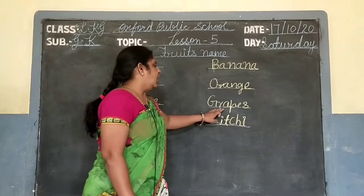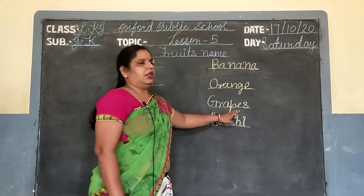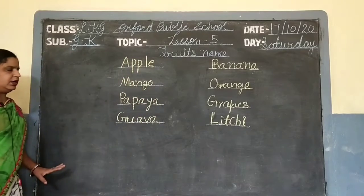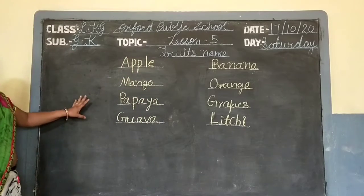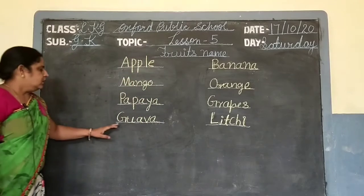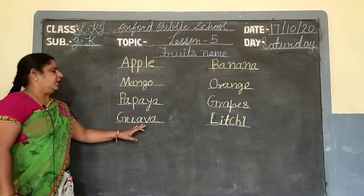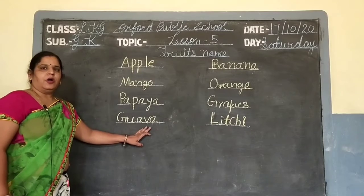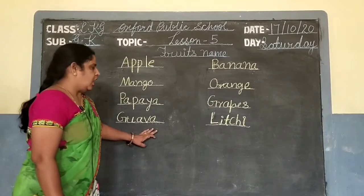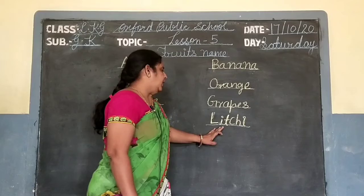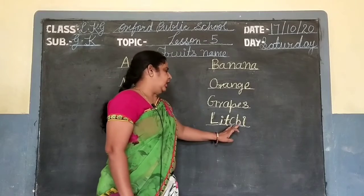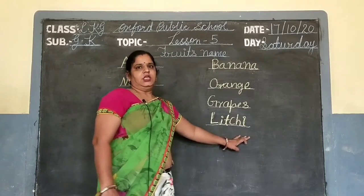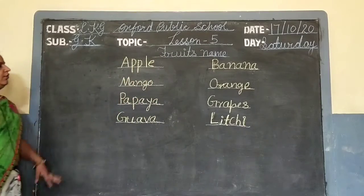G-R-A-P-E-S. Grapes. Grapes यानी अंगूर। G-U-A-V-A. Guava. Guava means अमरूद। L-I-T-C-H-I. Litchi. Litchi यानी लीची। Okay.